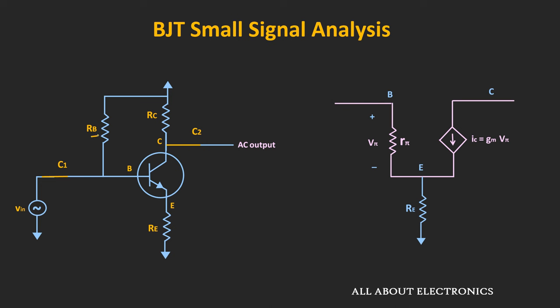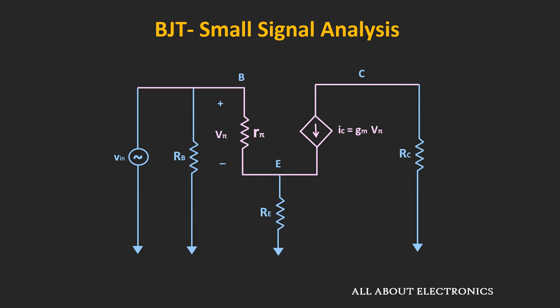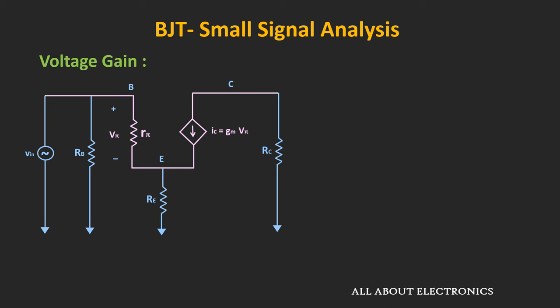This base resistor is connected between the base and the ground terminal, while this collector resistor is connected between the collector and the ground terminal, and this input signal is applied between the base and the ground terminal. Let's find out the voltage gain, the input impedance, and the output impedance of the given circuit. Let's say the current flowing through resistor Rc is equal to I0. If we apply the KCL at this node, then we can say that this collector current Ic is equal to I0. This collector current Ic is equal to gm times Vπ, while this output current can be given as minus V0 divided by Rc. From this we can say that the output voltage V0 is equal to gm times Vπ times Rc.